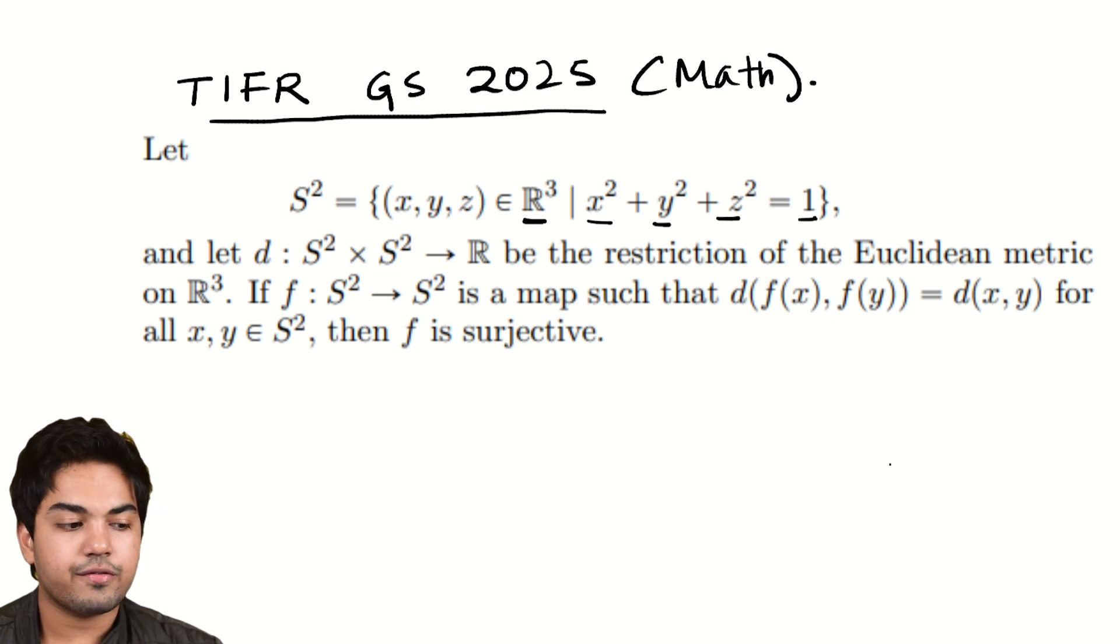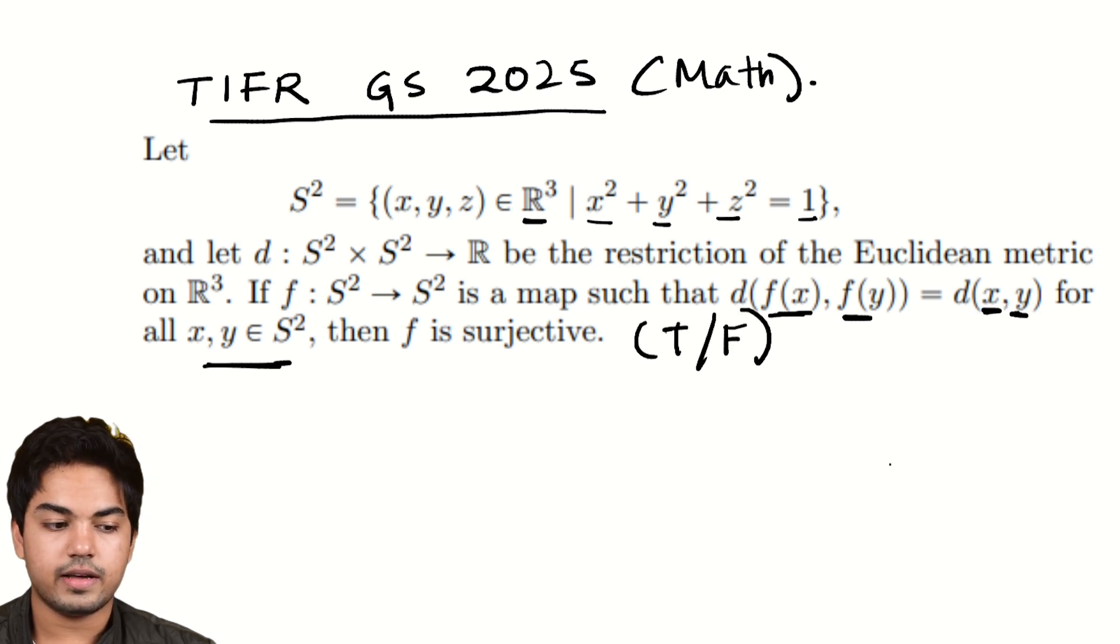And let d: S² × S² → R be the restriction of the Euclidean metric on R³. If f: S² → S² is a map such that d(f(x), f(y)) = d(x, y) for all x,y ∈ S², then f is surjective. What kind of a question is this? This is a true false question.